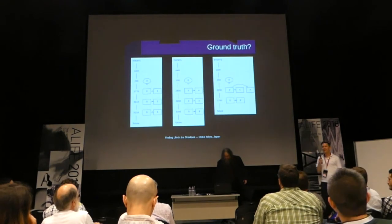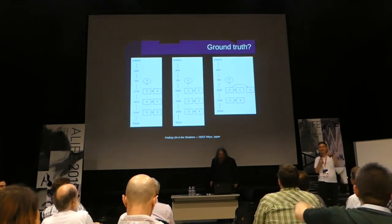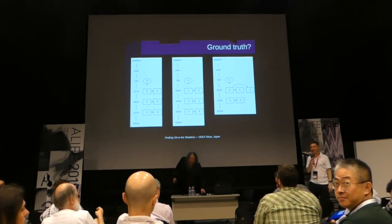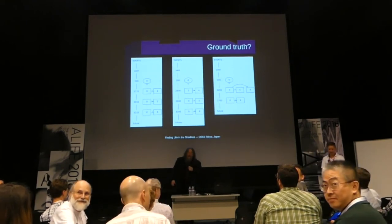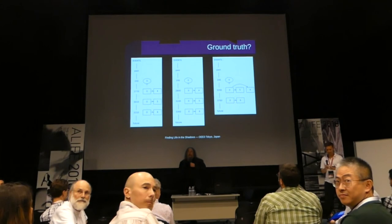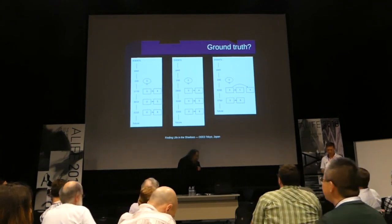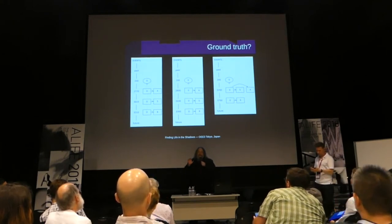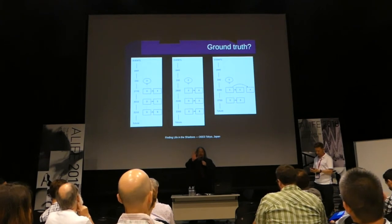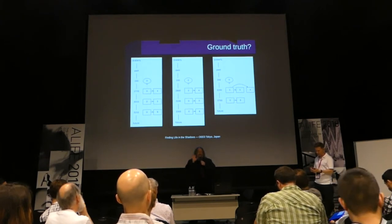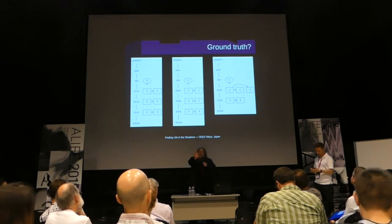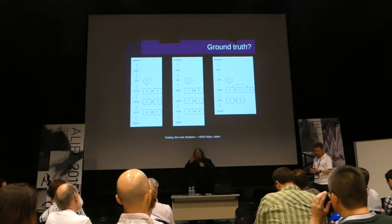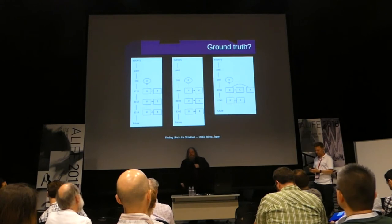Questions from the audience. One question asked whether image compression statistics could reveal anything interesting. The speaker noted that in this case they knew what they were looking for — the simulator uses stylistic colors for inner and outer membranes, so they were looking for literal pixel matches. He acknowledged he has thought about compressibility in 2D as a signal, but they haven't needed it yet.